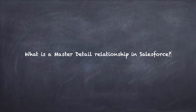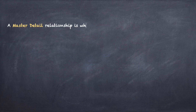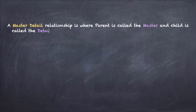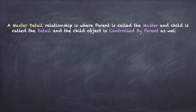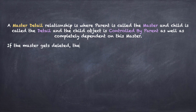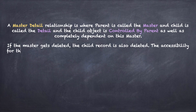What is a master detail relationship in Salesforce? A master detail relationship is where the parent is called the master and the child is called the detail. The child object is controlled by and completely dependent on its master. If the master gets deleted, the child record is also deleted. The accessibility for the child is defined by the parent.